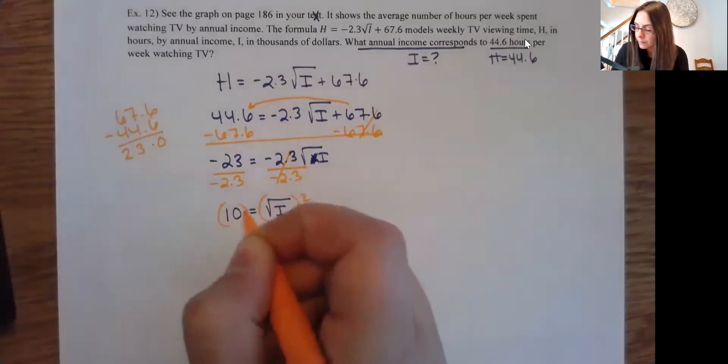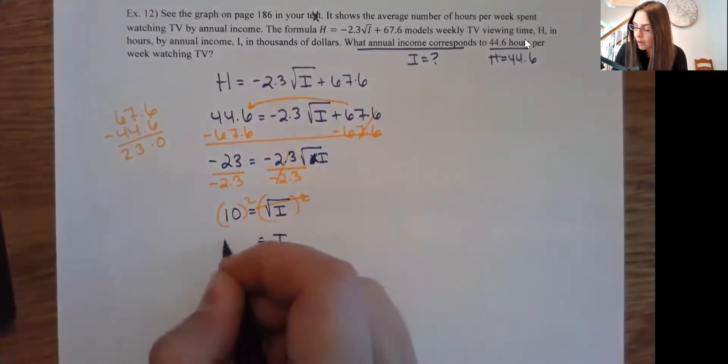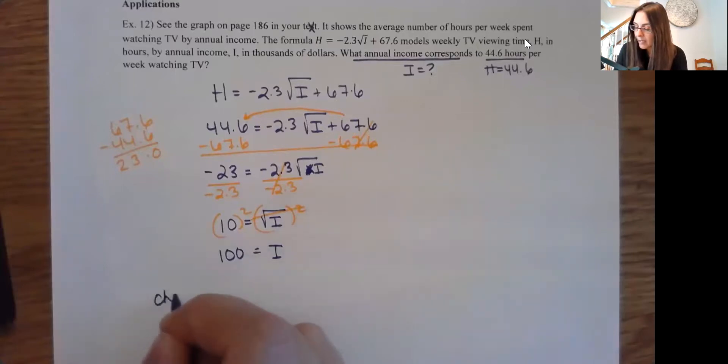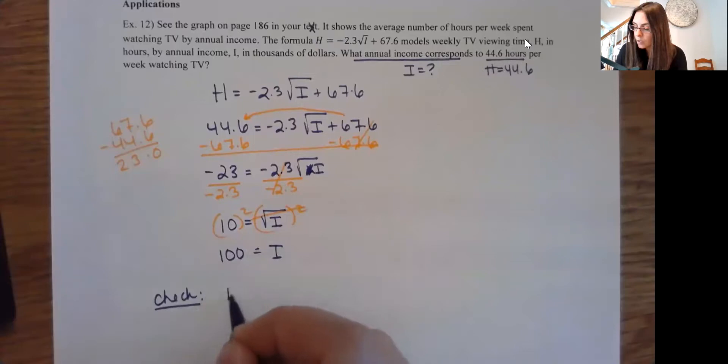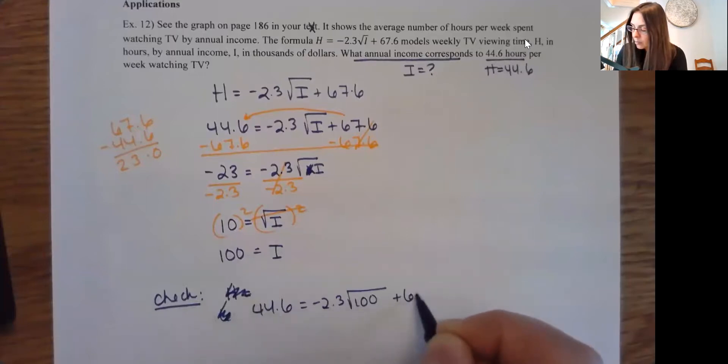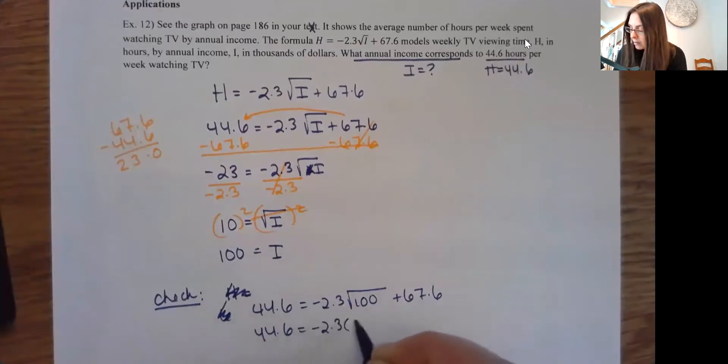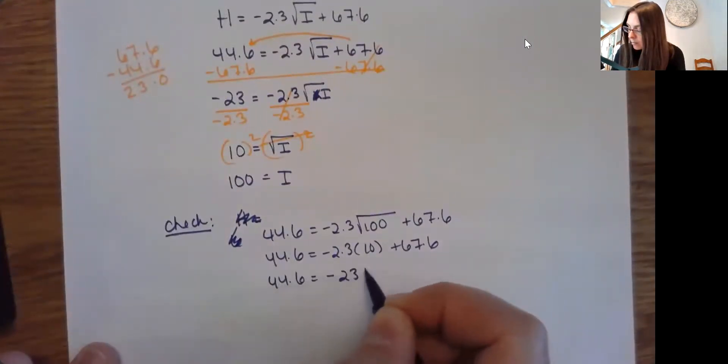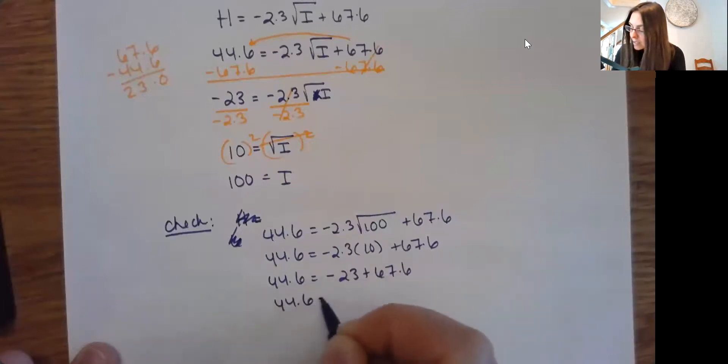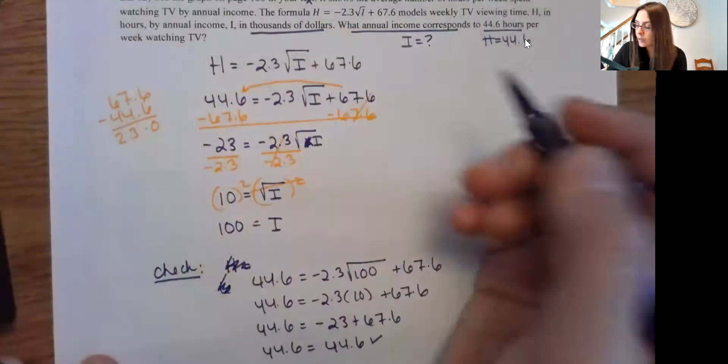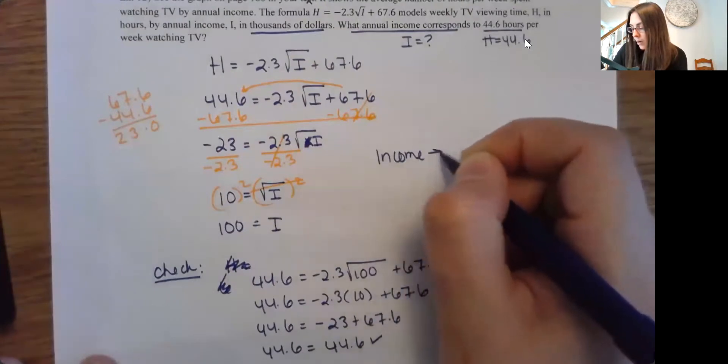And I have I is equal to 100. So now this is our income. Let's go ahead and check this and see if it actually works out. So I do want to check it because it is a radical. So you can get extraneous solutions. So I would do H equals, or I guess my H was 67, right? Or 44, excuse me. 44.6 equals negative 2.3 square root of 100 plus 67.6. All square root of 100 is 10. Negative 2.3 times 10 is negative 23. And if you add that together on the right-hand side, you will get 44.6. So it does check out. So our income level here is 100. And just be careful. It is in thousands of dollars. So the income would be $100,000.